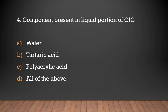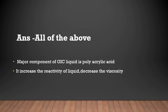Component present in the liquid portion of GIC: (a) water, (b) tartaric acid, (c) polyacrylic acid, (d) all of the above. Answer: All of the above. The major component of the GIC liquid is polyacrylic acid. Polyacrylic acid increases the reactivity of the liquid and decreases the viscosity.